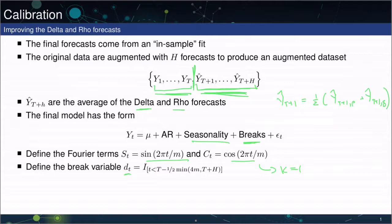We're also going to define a new variable dt, which is going to be a break term, which is going to be an indicator that t is less than the sample size, minus then we have one half, the minimum of 4m, the seasons, or t plus h, which is the original sample size plus the forecast horizon. So in other words, if you have an observation that's relatively early in the sample, you're going to have one trend or one intercept for this value. And then if you have the break, you're going to actually allow for potentially a different trend to happen after the break. It's going to be a trend break variable.